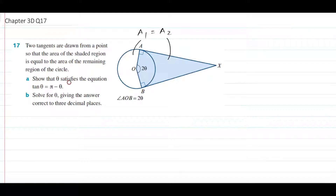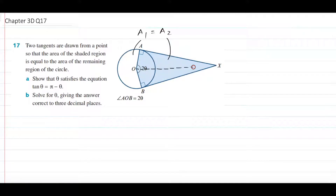Part A: show that theta satisfies the equation tan theta equals pi minus theta. First of all, what is theta? We know the full angle shown is 2 theta, so theta by itself is half of that. Using circle geometry, if you connect the center to the point of intersection of the two tangents, it bisects the angle — so this would be theta and that would be theta as well. That's what theta is.